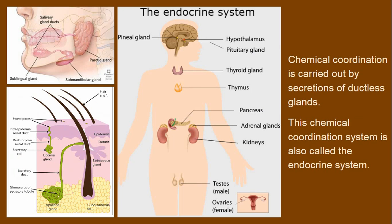Chemical coordination is carried out by secretion of ductless glands. There are two types of glands. In a sweat gland, a duct is present — this is called exocrine secretion. When there is no duct, the secretion goes directly into the blood — this is the endocrine system.